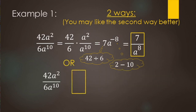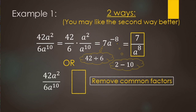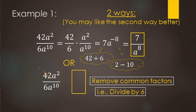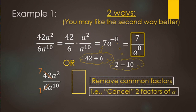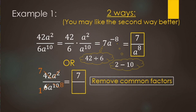The second way is removing common factors, also called canceling. We divide out a 6 from both 42 and 6: 42 divided by 6 makes 7, and 6 divided by 6 is 1. Next, for the A factors, we have two A's in the numerator and ten A's in the denominator. Remove two factors of A from both — no more A's in the numerator, and eight factors of A remaining in the denominator. So the numerator is just 7 and the denominator is A to the eighth. Both methods give the same answer.